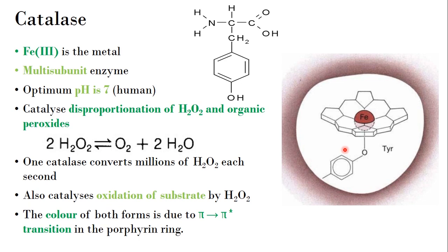Catalase is a multi-subunit enzyme with an optimum pH of 7 for humans. Catalysis means speeding up a reaction by lowering the activation energy of a process to produce the product. This enzyme catalyzes the disproportionation of hydrogen peroxide and other organic peroxides.